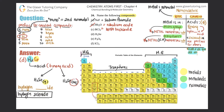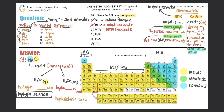In aqueous form, the naming is hydro-[non-metal]-ic acid. So for the aqueous form of H₂Se, you take selenium, trim it to selen-, and add -ic acid, giving hydroselenic acid. Since the problem doesn't specify the state, H₂Se has two possible names: hydrogen selenide (gas) or hydroselenic acid (aqueous).